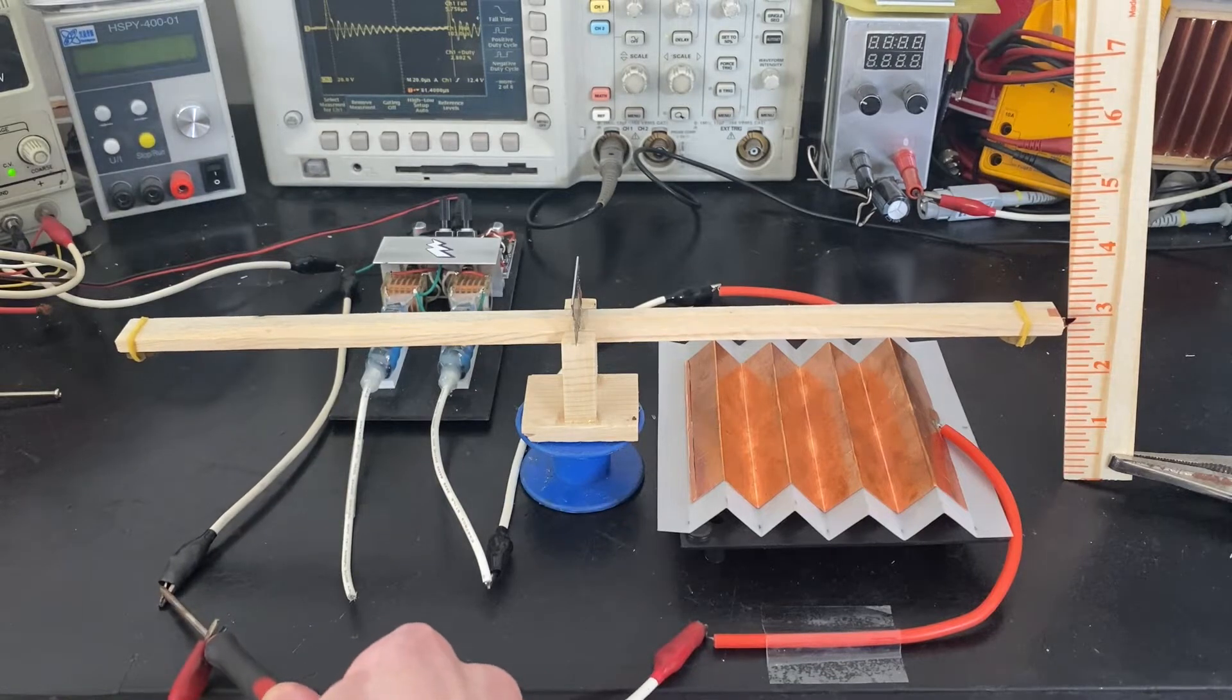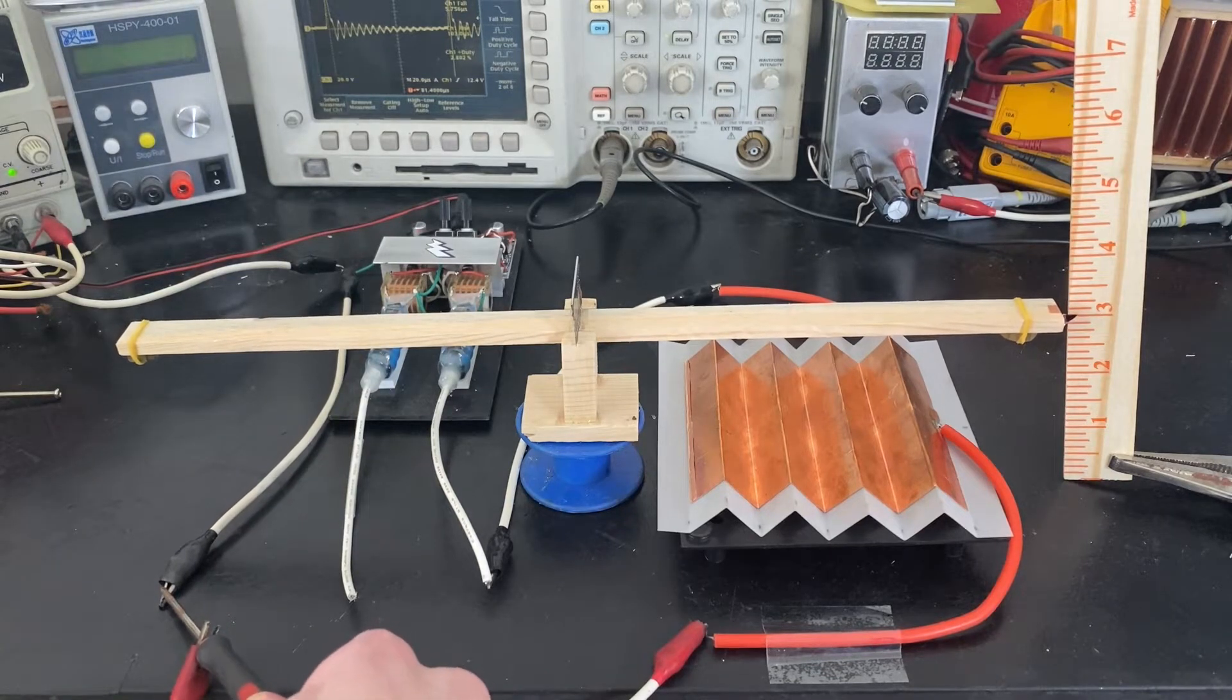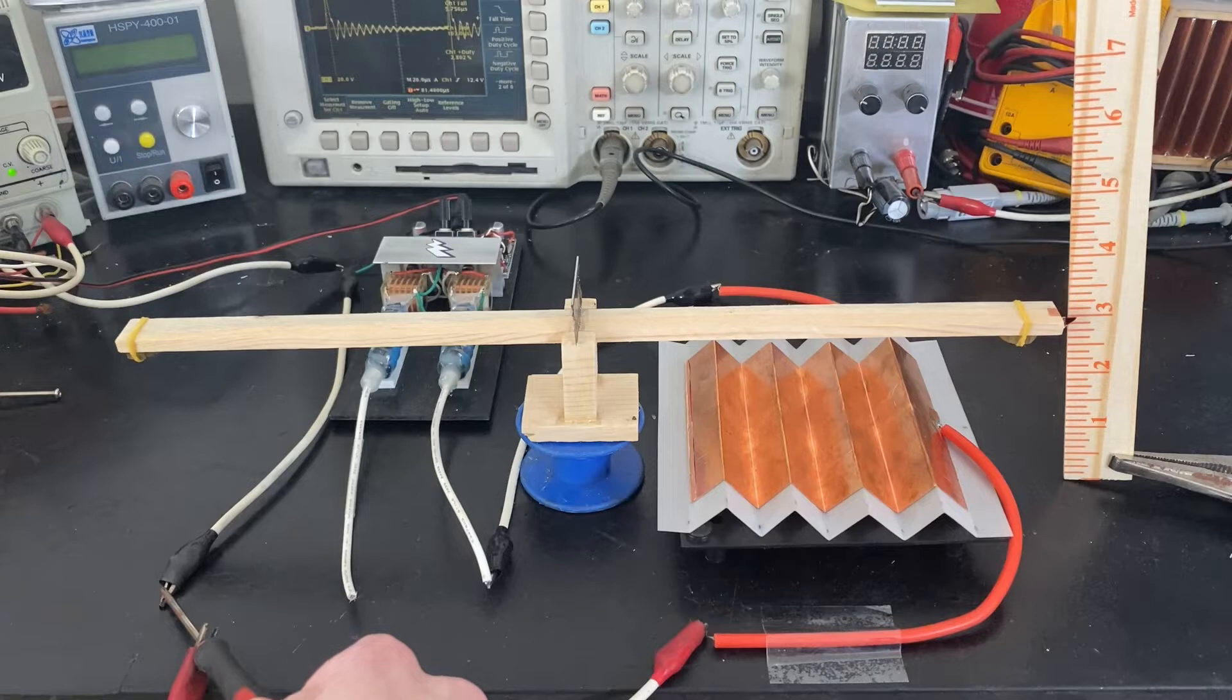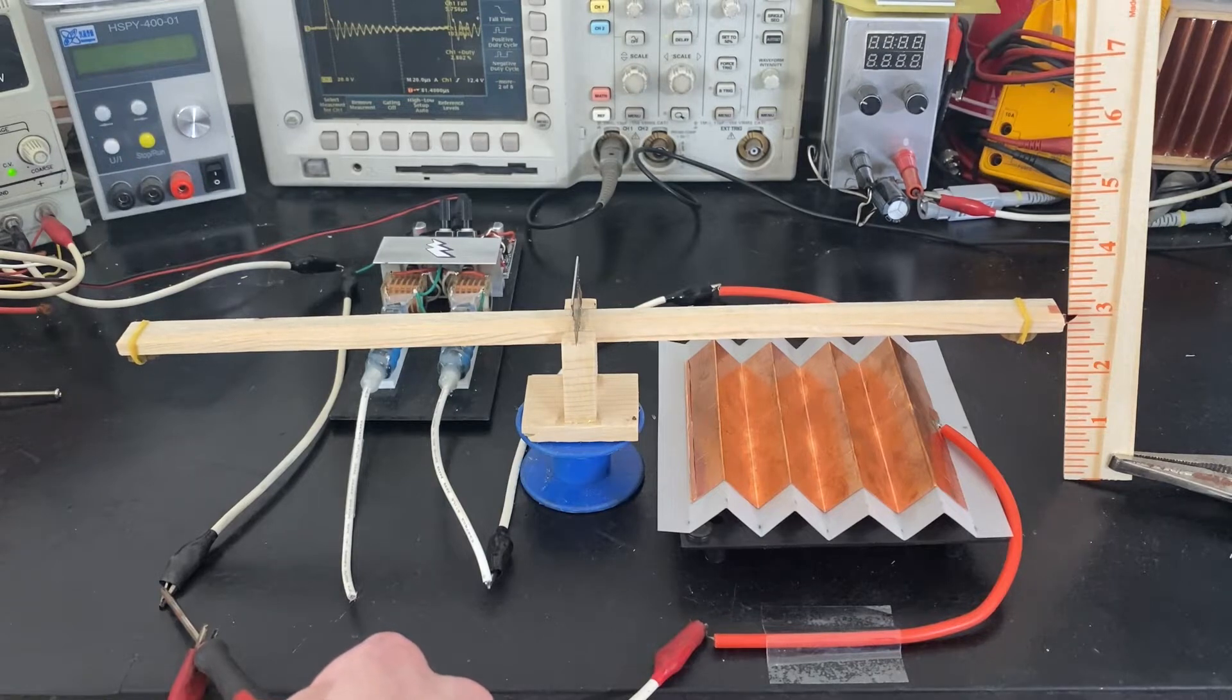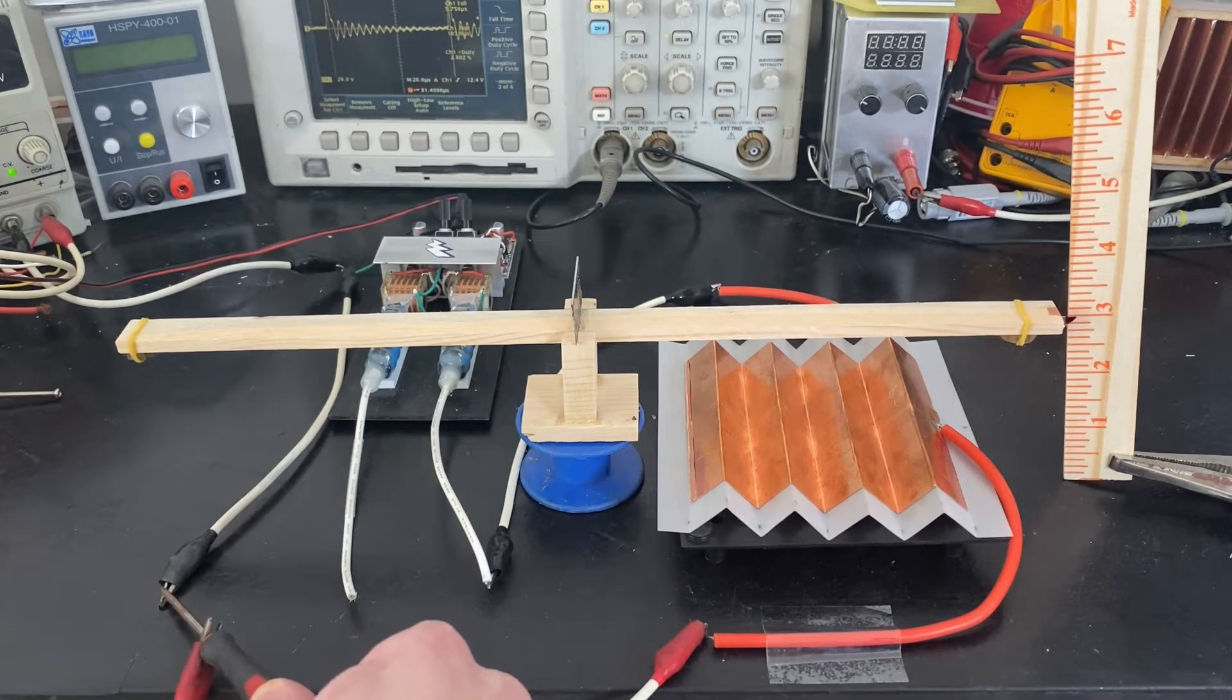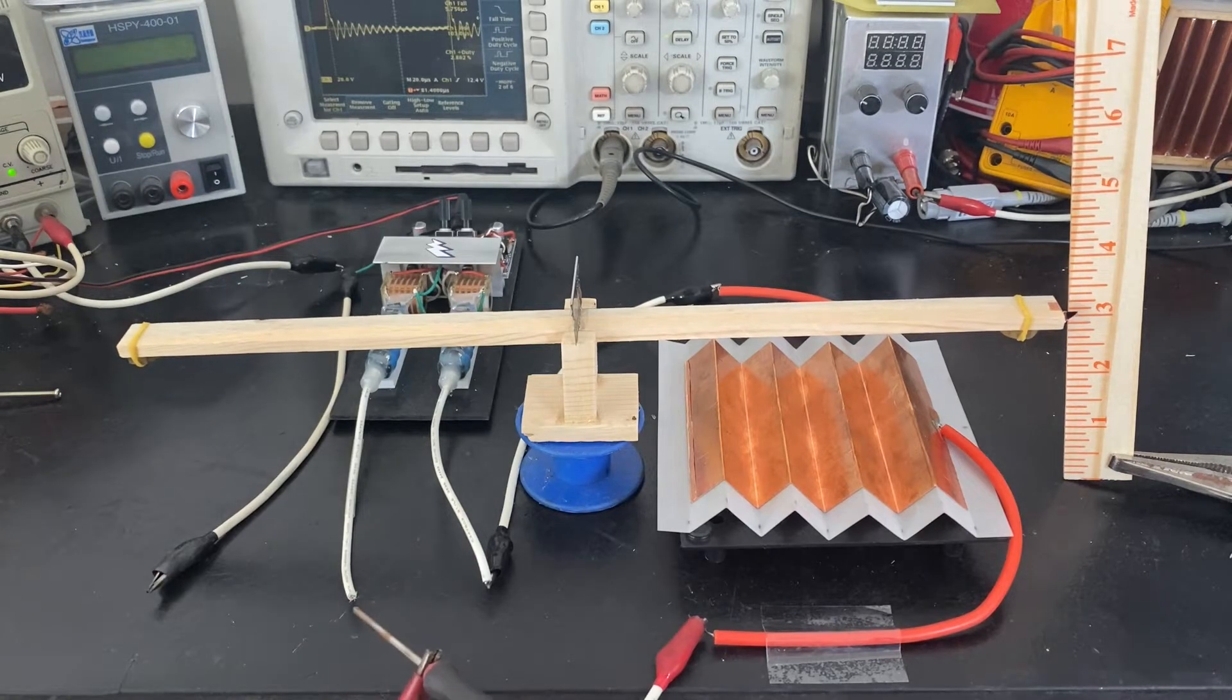So now what we'll do to test his claim is we'll first make sure the top electrode is not charged by grounding it. And now we'll give it a small amount of positive charge. So here we go, let's charge it slightly positive.